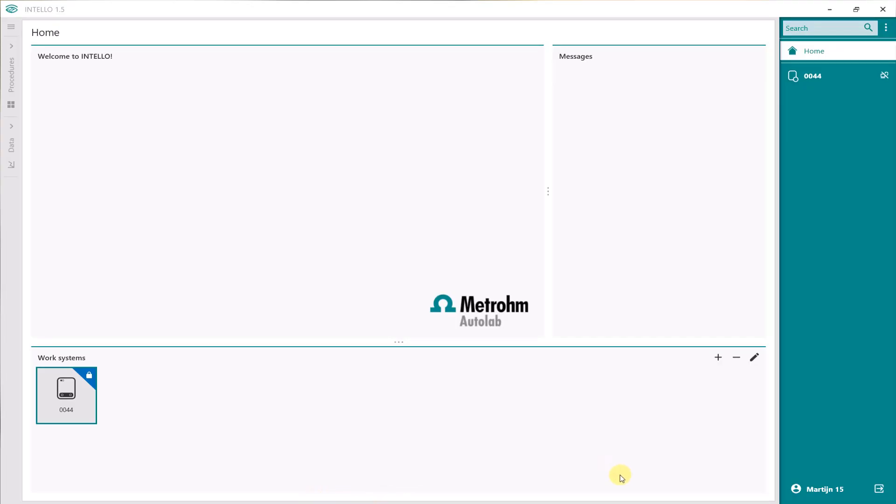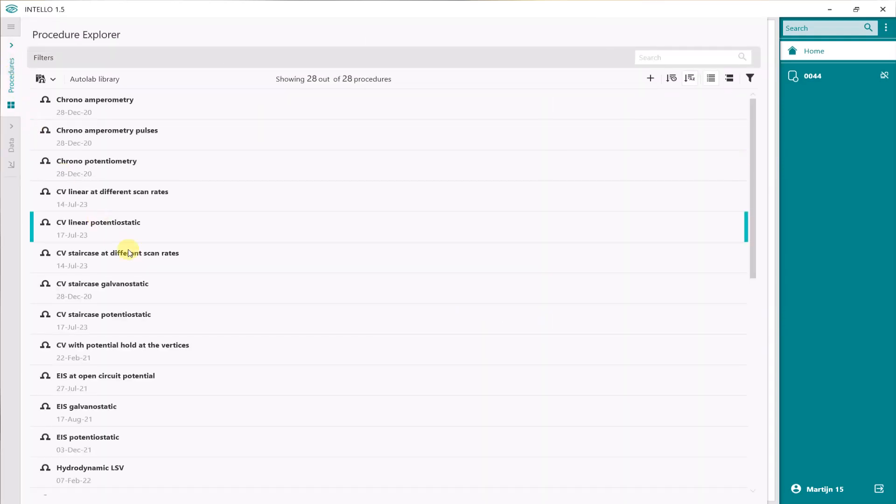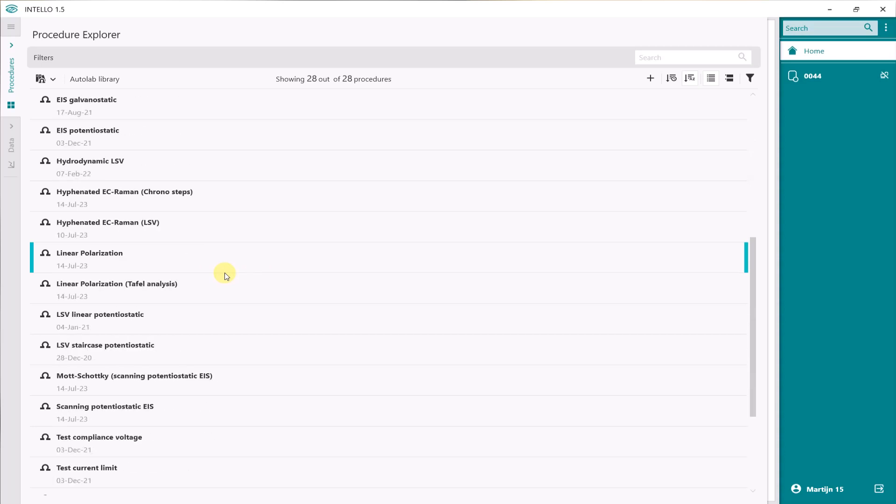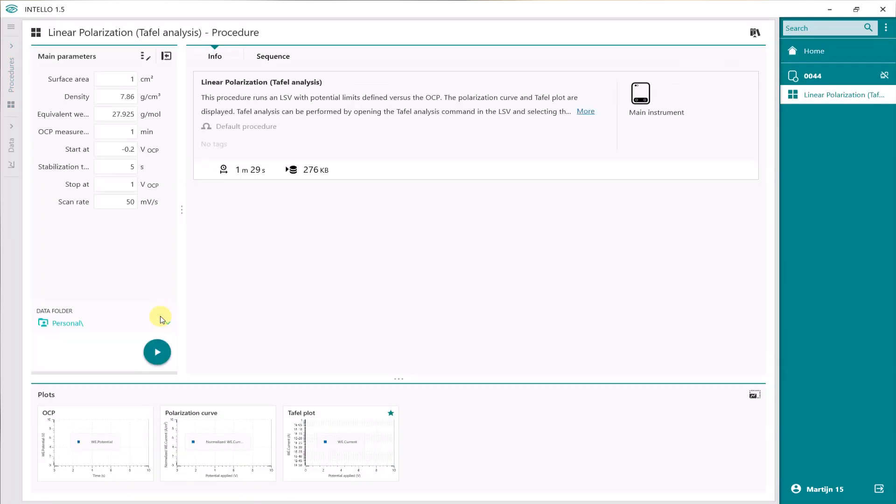Welcome to the INTELLO software. In the INTELLO software, we can find the default procedures on the left side of the program. Go to procedures. In the procedures, you will find linear polarization Tafel analysis. Double-click on this one. We can look at the sequence, but we can also find out the main parameters. In the main parameters, we already have the surface area, the density, the equivalent weight, the OCP measurement, start potential, stabilization time, stop potential, and scan rate. So we can modify these main parameters with your own sample.